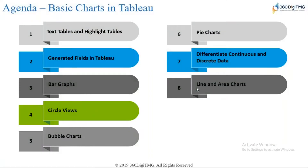Yesterday we began with the hands-on activities in our training. We completed Tableau architecture, looked at how to create text tables and highlight tables, understood what generated fields mean and how they are significant. We looked at bar graphs, circle views, and bubble charts. We also know the difference between discrete and continuous data and how it is represented visually on the graph.